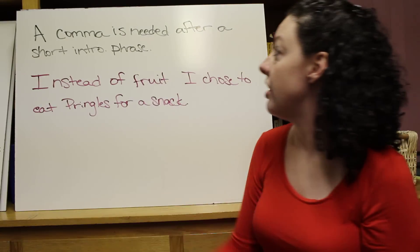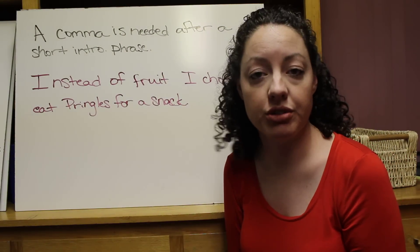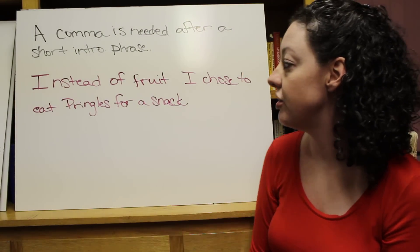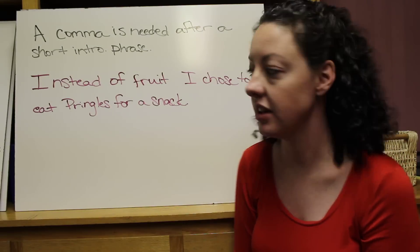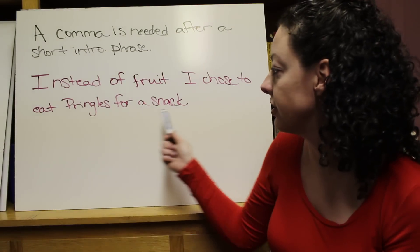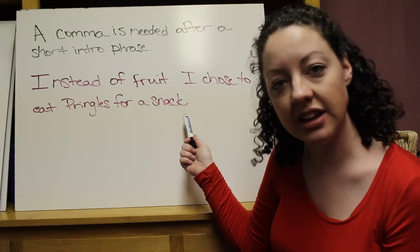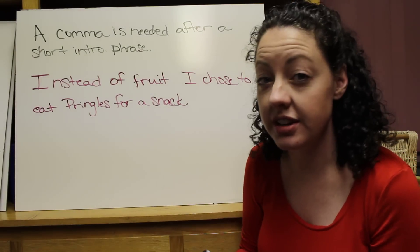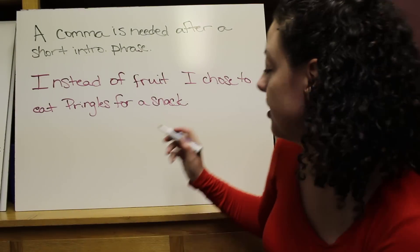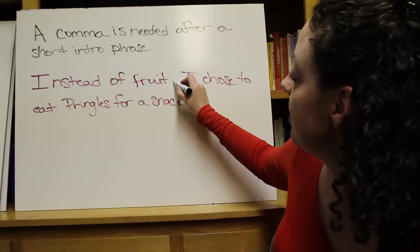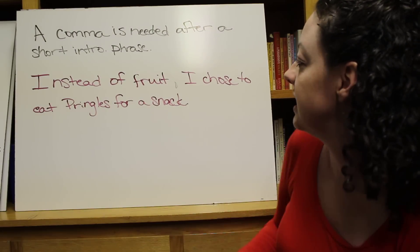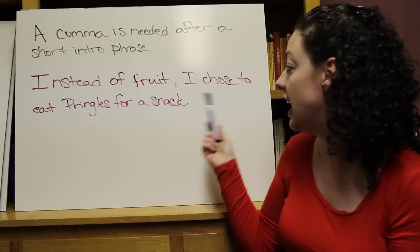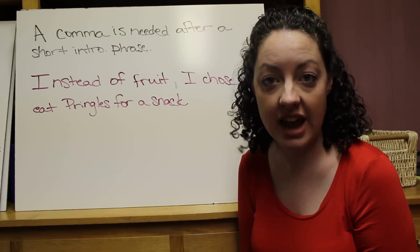A comma is also needed after a short introductory phrase. For example: 'Instead of fruit, I chose to eat Pringles for a snack.' 'I chose to eat Pringles for a snack' is a complete sentence, so 'instead of fruit' is an introductory phrase and you'll need a comma right here — 'Instead of fruit, I chose to eat Pringles for a snack.'